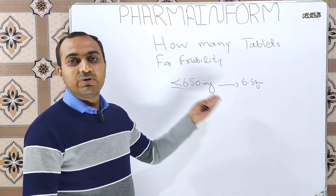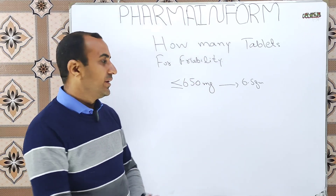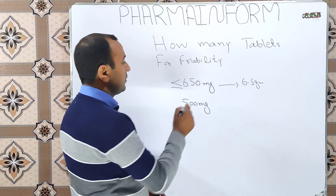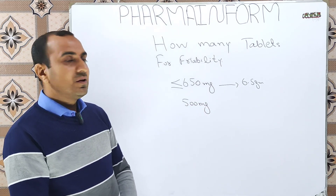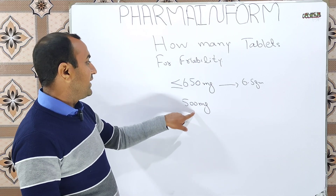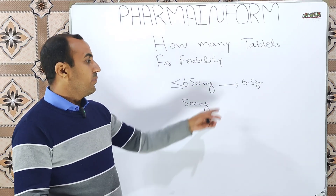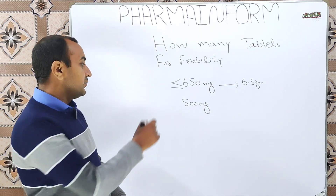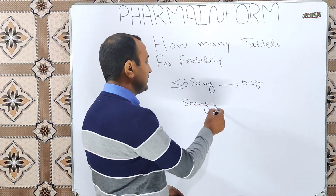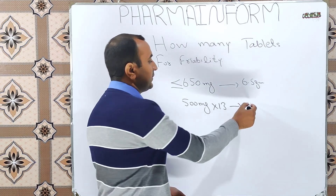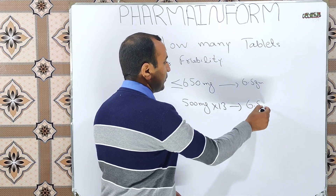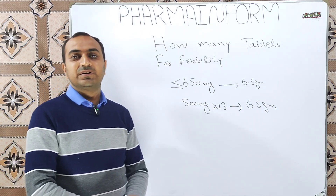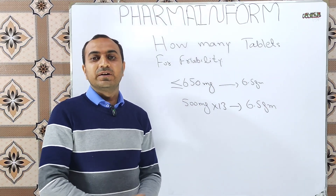Suppose that our individual tablet compression weight is 500 milligrams. One tablet weight is 500 milligrams, which is less than 650 milligrams. So how many tablets will be required to get closer to 6.5 grams? When we take 13 tablets, the value will be equal to 6.5 grams. So in this case, we will take 13 tablets for the friability test.